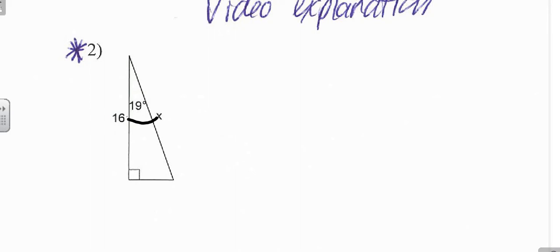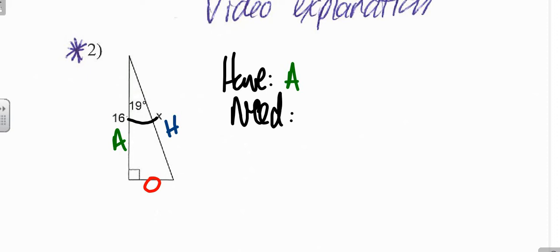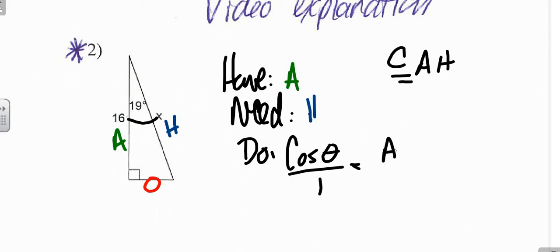That would make this the opposite, this the adjacent, and this the hypotenuse. Have the adjacent side, need the hypotenuse. I've got an A-H combo in SOH-CAH-TOA: cosine. So we are going to do cosine theta over 1 equals A over H. Cosine 19 degrees over 1 equals A, which is 16, over H, which is our x.